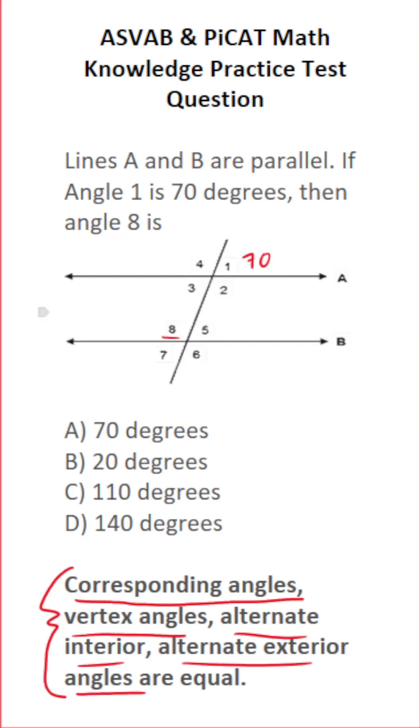Likewise, you have to know that straight lines have 180 degrees. In other words, if angle 1 is 70 degrees and this is a straight line, then we know angle 4 is going to be 180 minus 70 or 110 degrees.